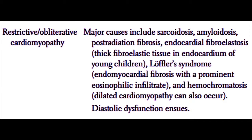The third type of cardiomyopathy is restrictive or obliterative cardiomyopathy. In general, we refer to these as infiltrative diseases because they involve some type of external process infiltrating the cardiac muscle. The major causes include sarcoidosis, amyloidosis, post-radiation fibrosis, and endocardial fibroelastosis. Other causes include Löffler's syndrome, which is an eosinophilic infiltrate into the endomyocardial fibrosis, and hemochromatosis. Patients with hemochromatosis may also develop a dilated cardiomyopathy. These cardiomyopathies usually cause diastolic dysfunction because the heart has difficulty relaxing.